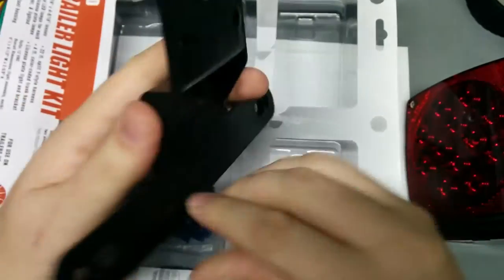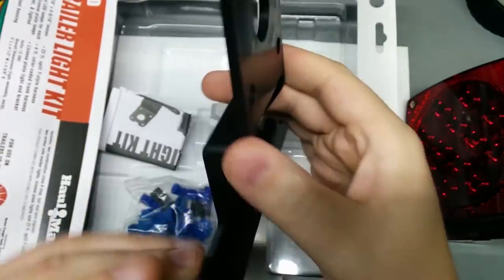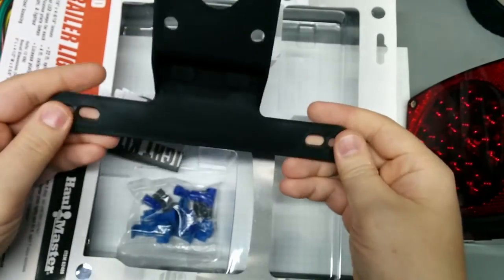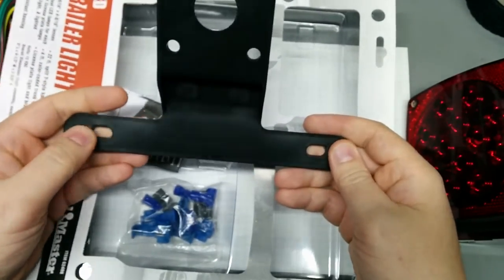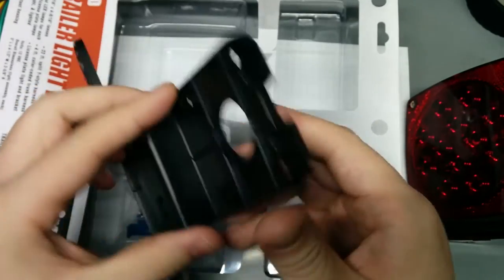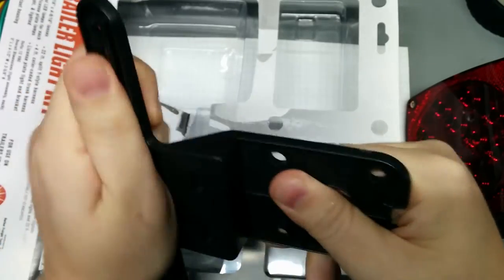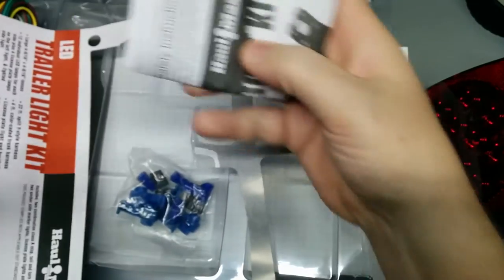And then a plastic license plate bracket, which I don't know if I'm going to bother using or not. Now that I look at it, at least it is angled a little bit to accommodate for tipping the trailer. But yeah, it's just plastic. Not sure how well that would hold up. And of course, full directions.